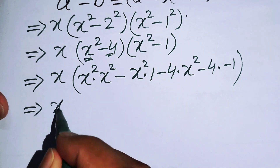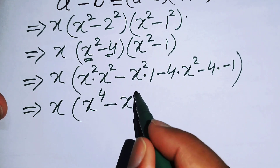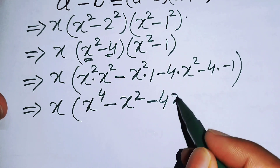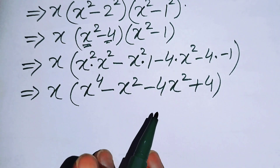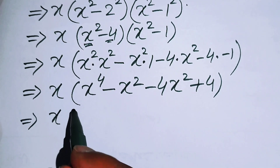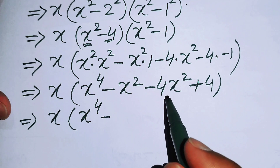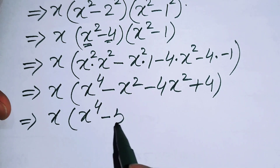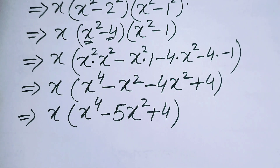Combining like terms: X times (X to the power 4 minus X squared minus 4X squared plus 4), which simplifies to X times (X to the power 4 minus 5X squared plus 4). This is now a fourth-order polynomial expression.